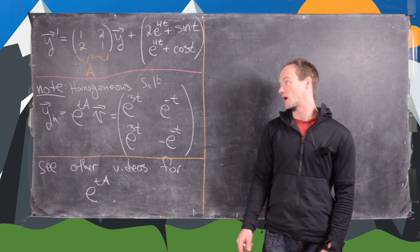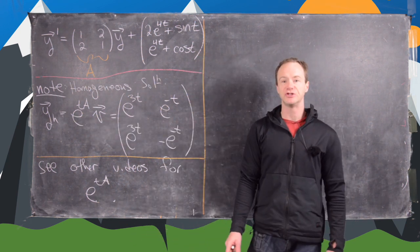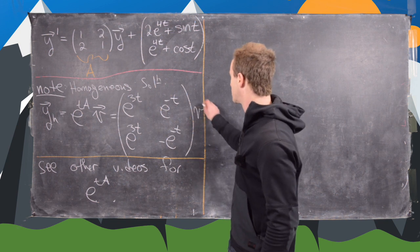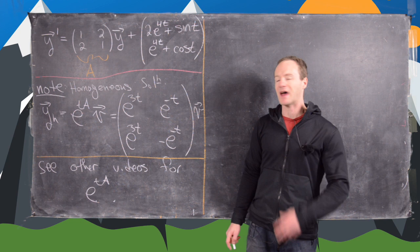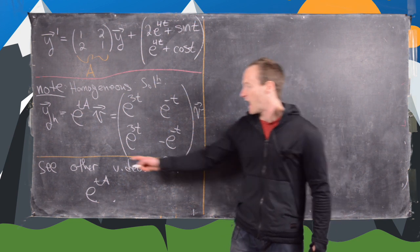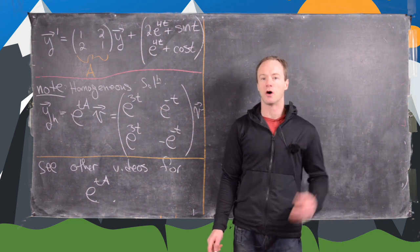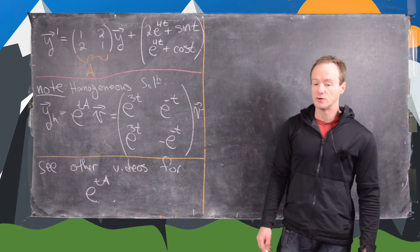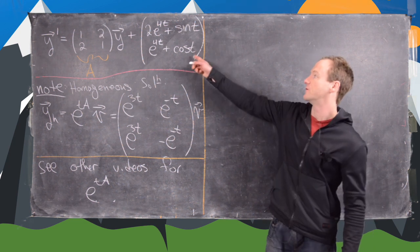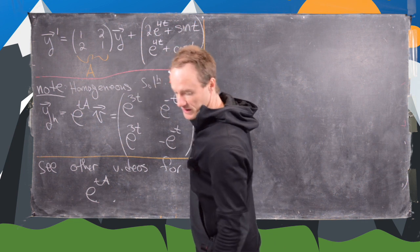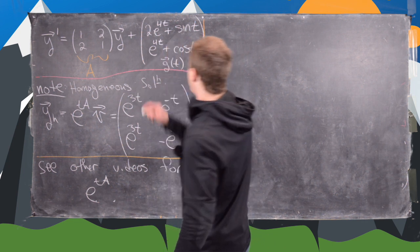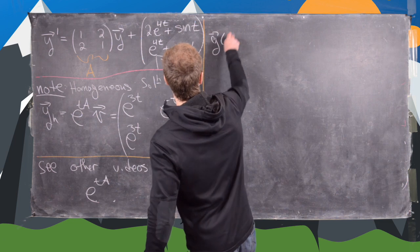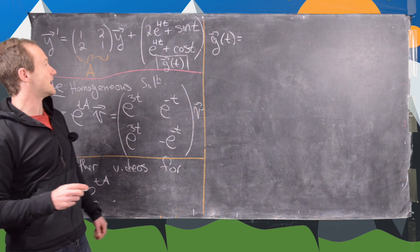I just want to point out some things I'm not going to cover in this video. I'm not going to cover how to find the homogeneous solution, which is given by this matrix exponential e to the tA times an arbitrary vector in R2, where that has to do with your initial conditions. I've got other videos where I calculate e to the tA, so I'll let you look at those if you're interested. The first thing we want to do as we attack this with the method of undetermined coefficients is to take this vector function g(t) and decompose it.